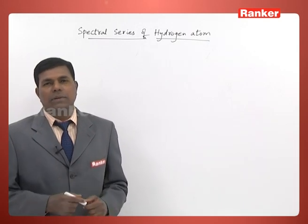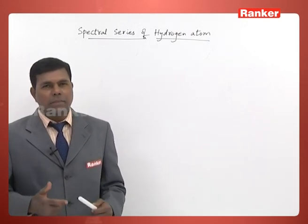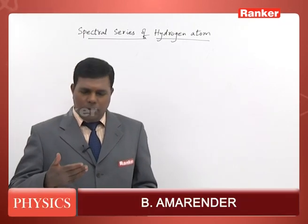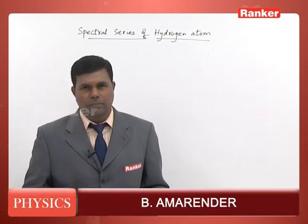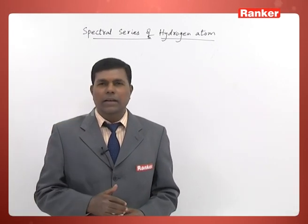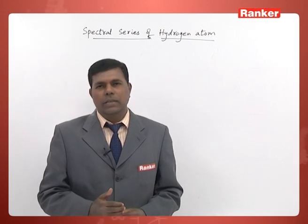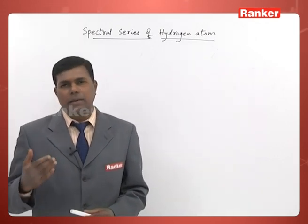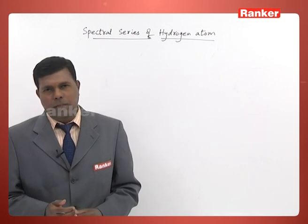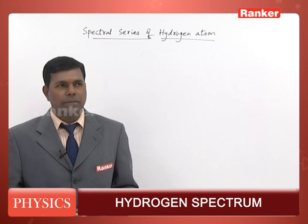We will see the spectral series of hydrogen atom. When an atom is excited, the electron rises to a higher energy level. Generally, these higher energy levels are unstable and the electron tends to fall into the lower energy level. In the process, energy is emitted in the form of radiation. The energy of each photon is equal to the difference in the energy levels.